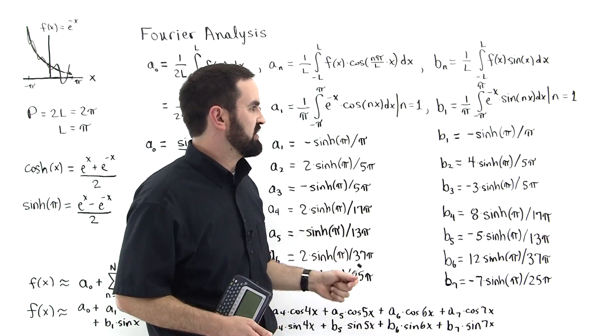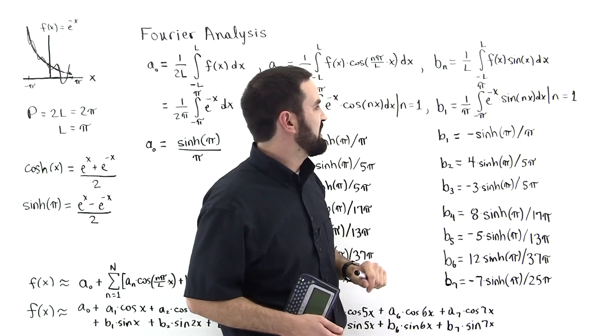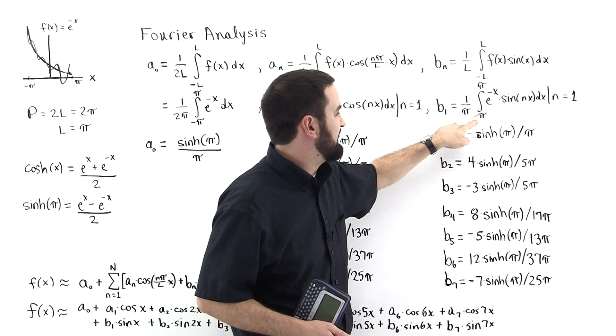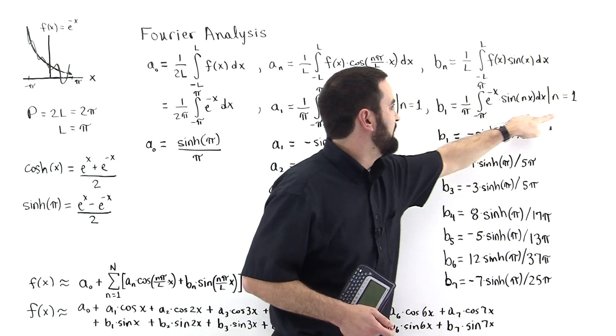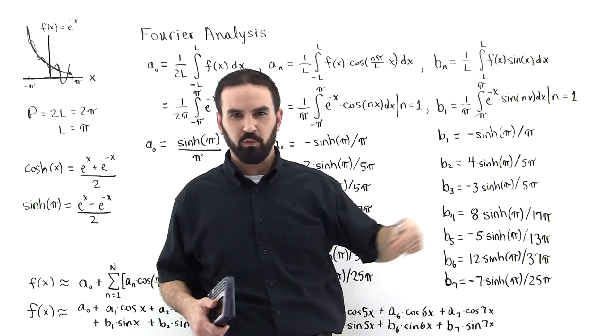And the same follows for b1. Just input this equality here, this equation here. Actually, it's just this right here. And put this thing into the calculator. n equals 1, n equals 2, n equals 3, n equals 4.